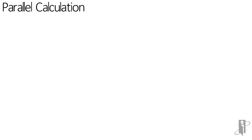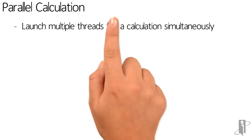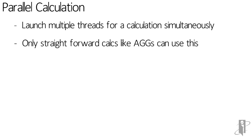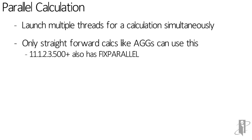In general we want to use parallel calculation where we can. It's going to use more and more threads and in general our computers have more and more CPUs and we don't want them just sitting idle. The problem is that generally only really straightforward calculations like aggregations or simple formulas can use parallel calculation. Version 11.1.2.3.500 added a new feature to a calc script called fixed parallel.